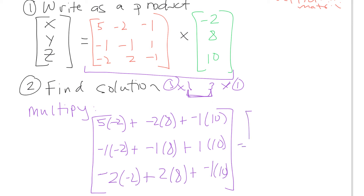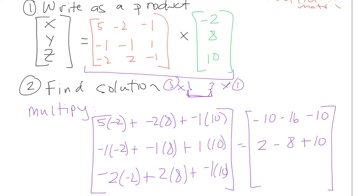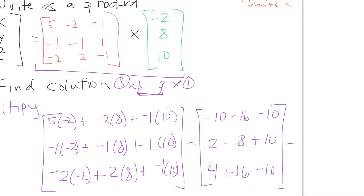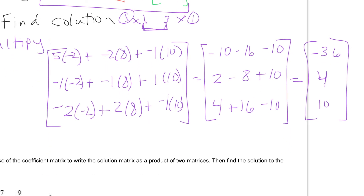Simplifying: 5 times negative 2 is negative 10, negative 2 times 8 is minus 16, negative 1 times 10 is minus 10. For the middle row: negative 1 times negative 2 is positive 2, negative 1 times 8 is minus 8, 1 times 10 is positive 10. For the bottom: negative 2 times negative 2 is 4, 2 times 8 is positive 16, negative 1 times 10 is minus 10. The final answer: x equals negative 36, y equals 4, and z equals 10.